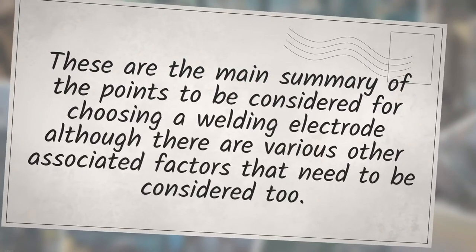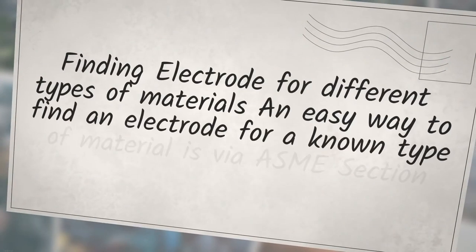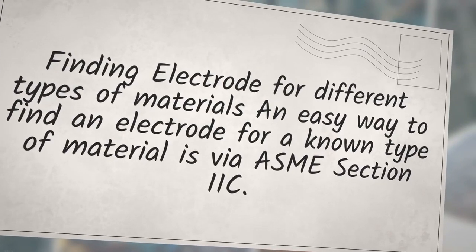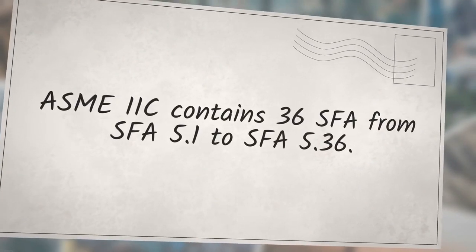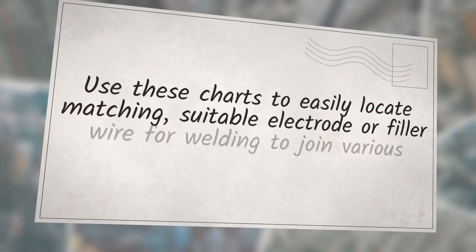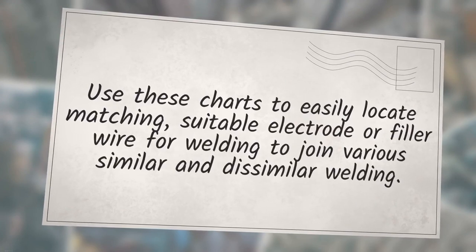Finding electrode for different types of materials: an easy way to find an electrode for a known type of material is via ASME Section IIC. ASME Section IIC contains 36 SFA standards from SFA 5.1 to SFA 5.36. A summary of these SFA numbers and their material types is shown in the below table. Use these charts to easily locate matching suitable electrode or filler wire for welding to join various similar and dissimilar welding.